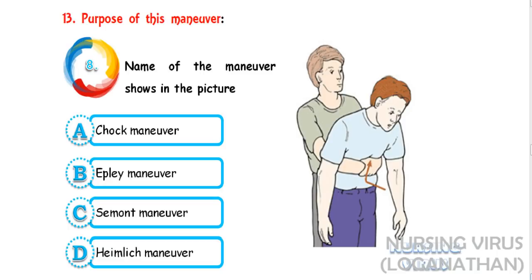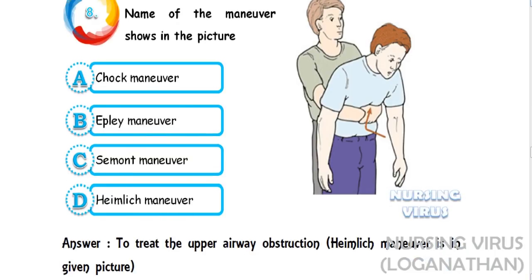The thirteenth question: they showed an image and asked what is the purpose of this maneuver. The maneuver shown is the Heimlich maneuver, and the answer is to treat upper airway obstruction.